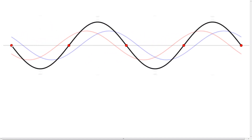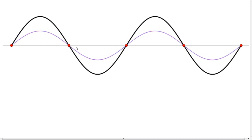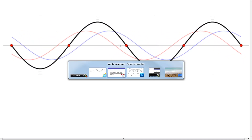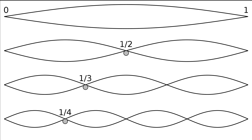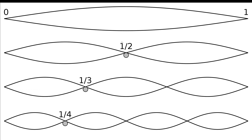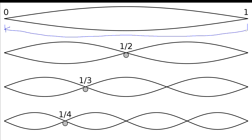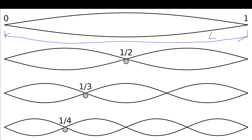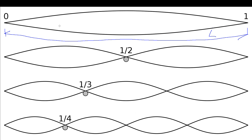We can see this pattern of node, anti-node, node, anti-node, and so forth. In this diagram, we're imagining a length of string, wire, or rope on which we've formed a standing wave. We've got this length across here, and we have a series of what we can refer to as modes. This top one is called the fundamental mode.